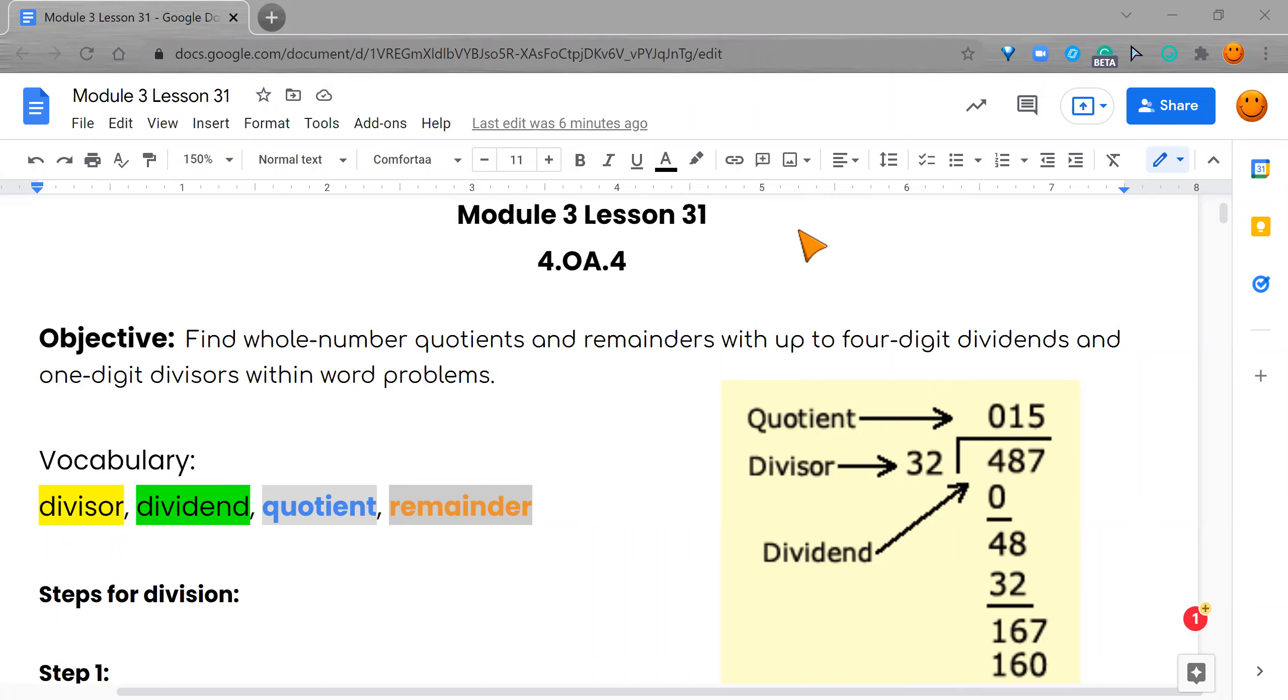And this is literally finding whole number quotients or remainders with up to four-digit dividends and one-digit divisors within word problems. We get to use words today, you guys. This is so exciting. We're going to blend language arts and math. We need to read the word problem to figure out our math problem to figure out the quotient.